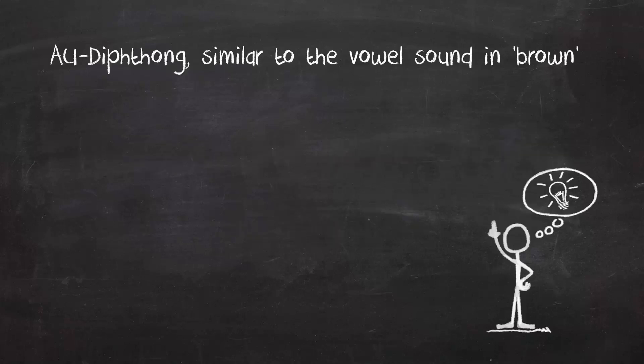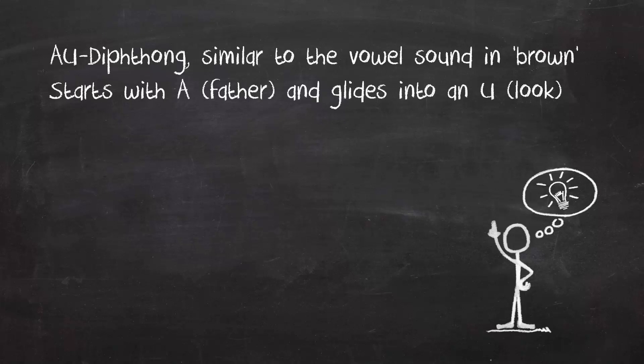Let's start with the AU diphthong. There is an equivalent in English and you can find it in words such as 'brown'. It starts with an A sound as in 'father' and then glides into a U sound as in 'look', but the transition is very fast.